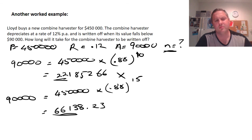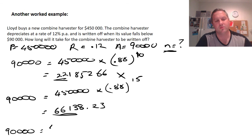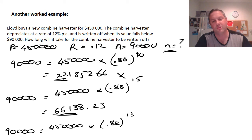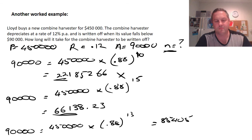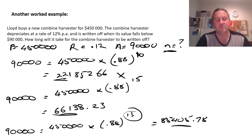Trying n = 13: A = 450,000 × (0.88)^13. The calculator gives $85,405.78, which is below $90,000. Checking n = 12 would give a value above $90,000, confirming that n = 13 is correct. It will take 13 years before the combine harvester falls below $90,000 in value, at which point it is written off. That is how you solve for n using trial and error with the depreciation formula.